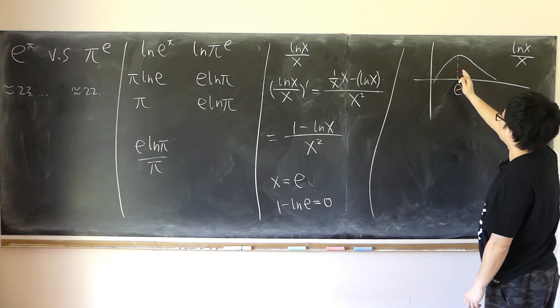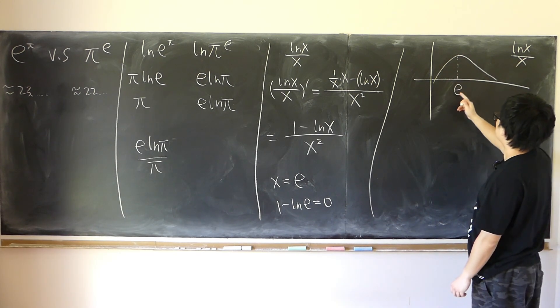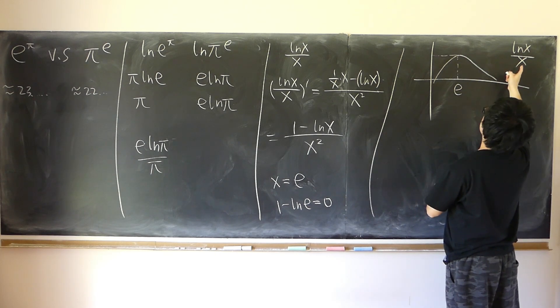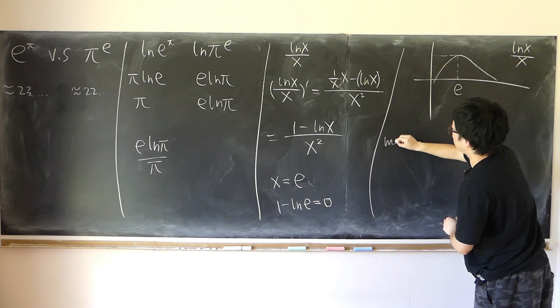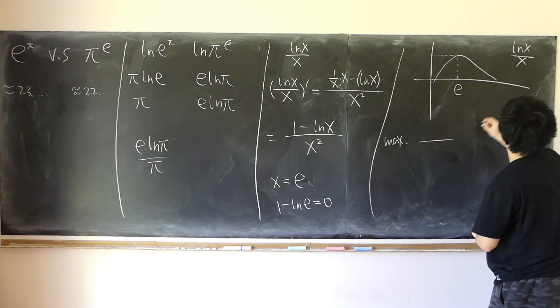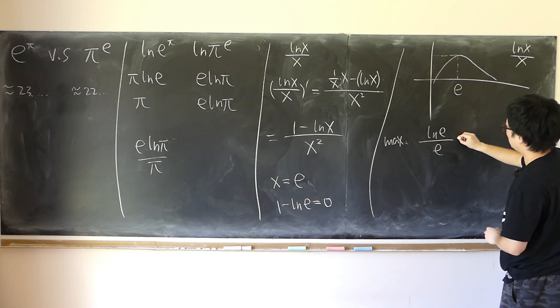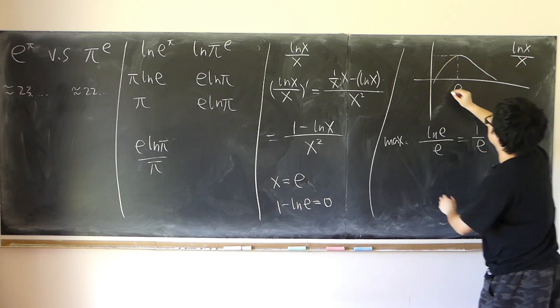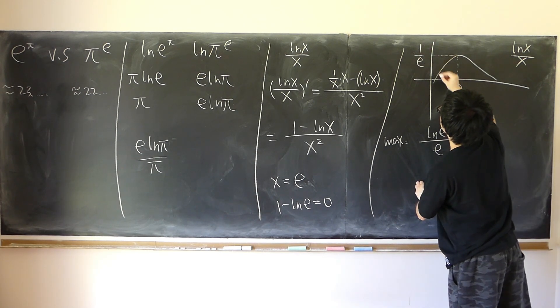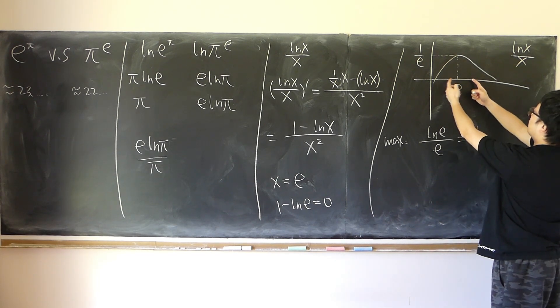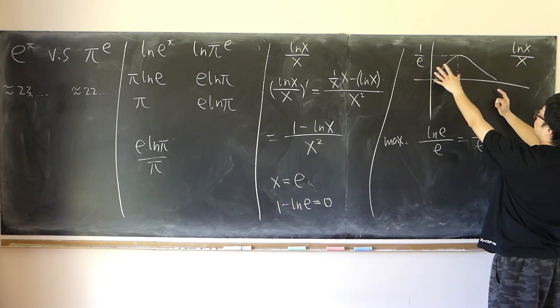So it must be that the function reaches its maximum value when x is equal to e. Maximum value is what? So maximum is log e over e, which is 1 over e. Everything else, x is equal to anything, then it's less than 1 over e.